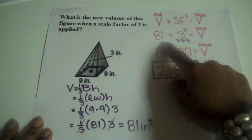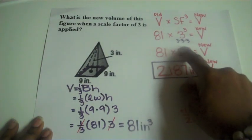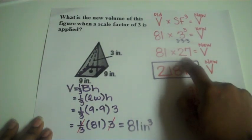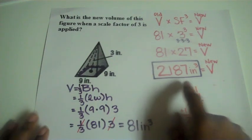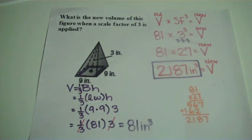And so now we're going to multiply that by our scale factor cubed. 3 cubed is 27. And when we multiply that by 81, we get a new volume of 2,187 inches cubed.